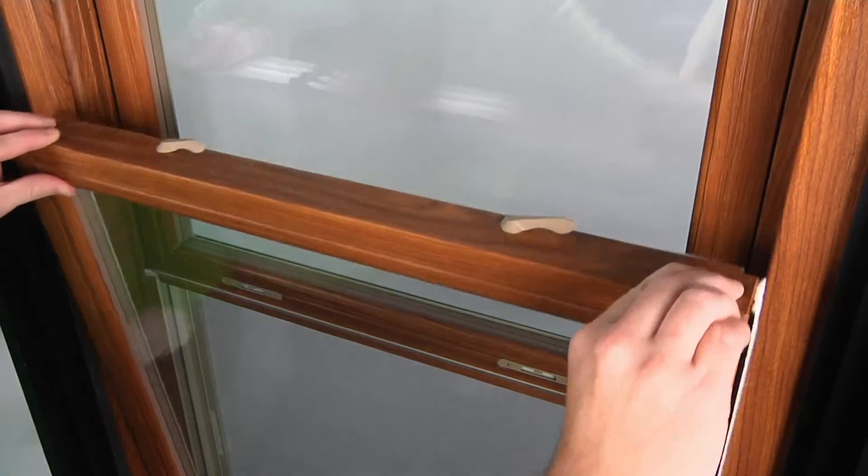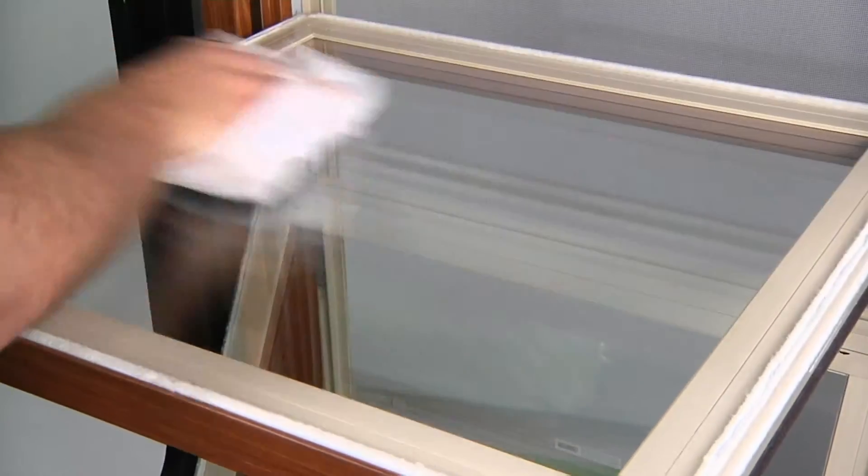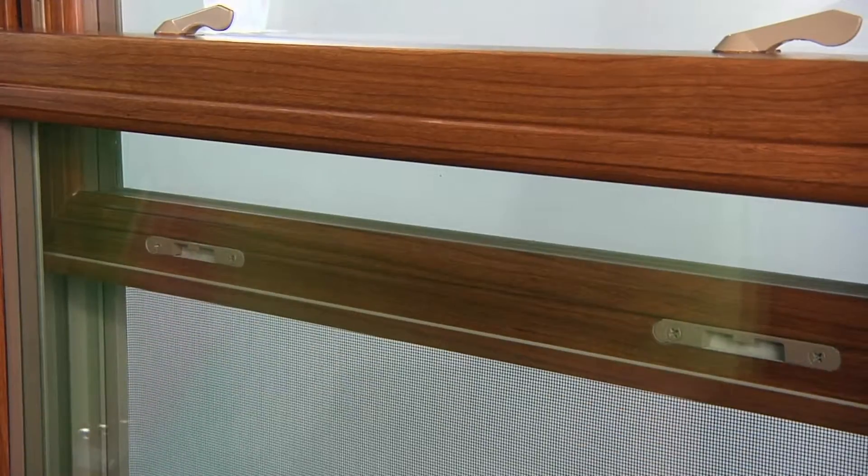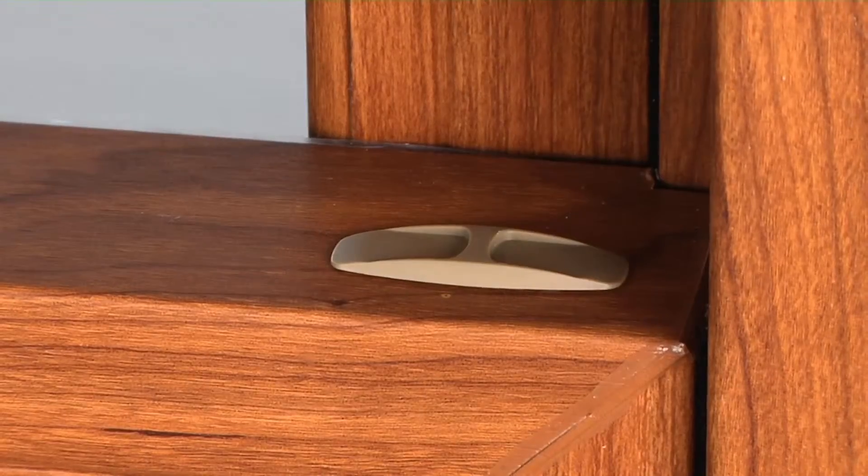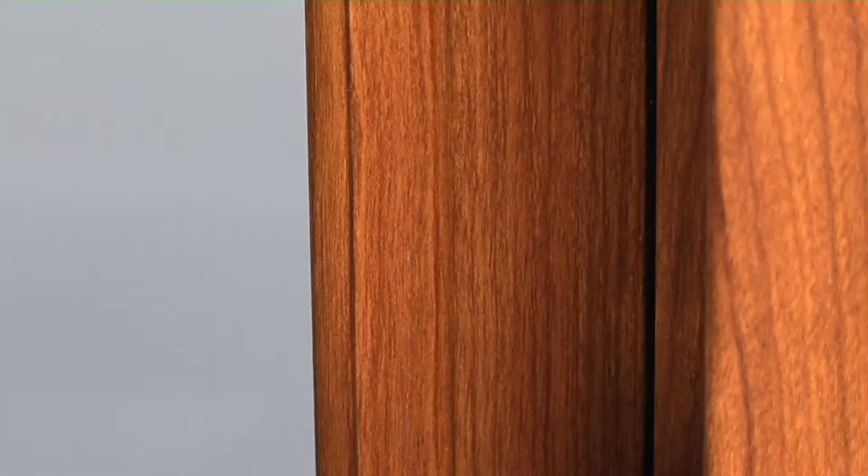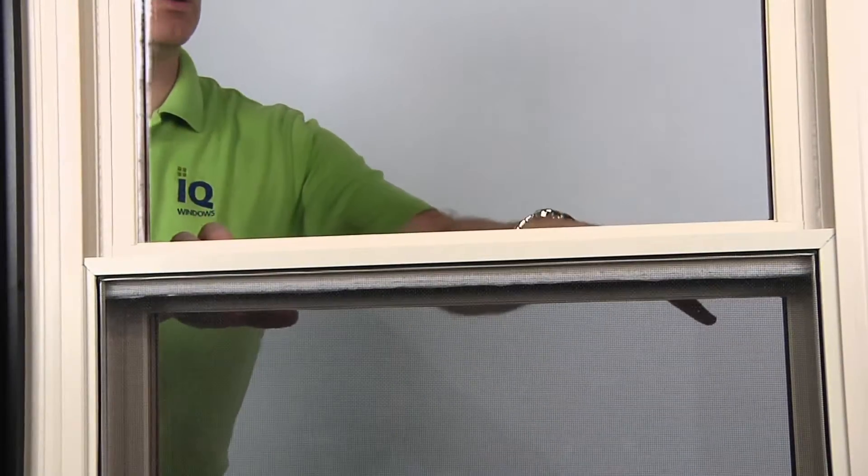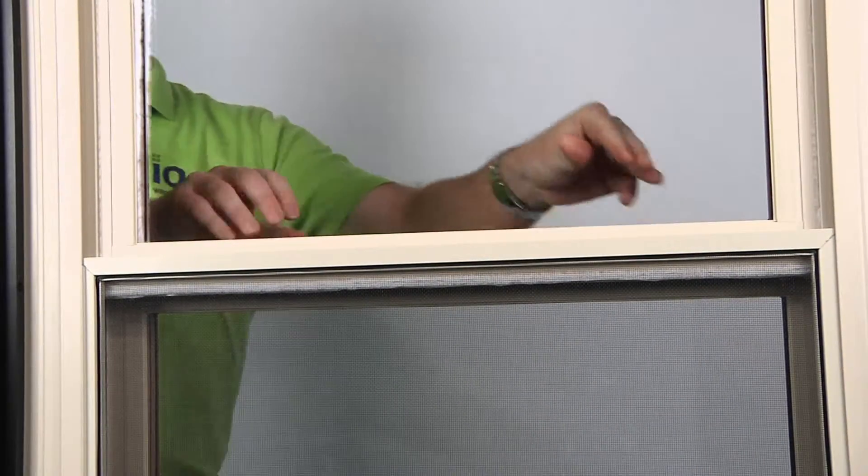Double-hung windows allow you to tilt the sashes in for easy, safe, and convenient cleaning. Ultra-low-profile recessed cam locks and tilt latches provide a clear and elegant line of sight. In fact, because of this design, you can't even see the hardware from the exterior.